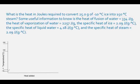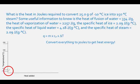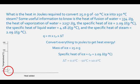The first part of the heating curve is to increase the temperature from negative 10 degrees Celsius to 0 degrees Celsius, which is the melting temperature of water. The equation to solve this portion is Q equals mcΔT. The mass of the ice is 25.0 grams, the specific heat of ice is 2.09 joules per gram degrees Celsius, and the change in temperature is 0 degrees Celsius minus negative 10 degrees Celsius, which equals 10 degrees Celsius.